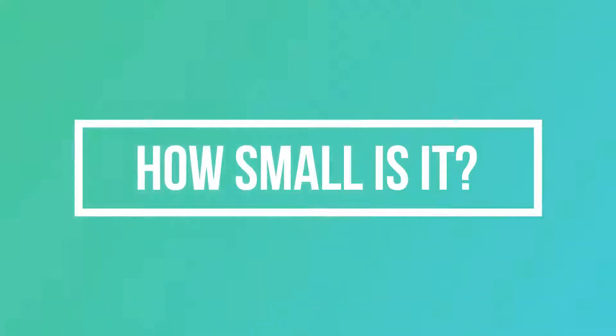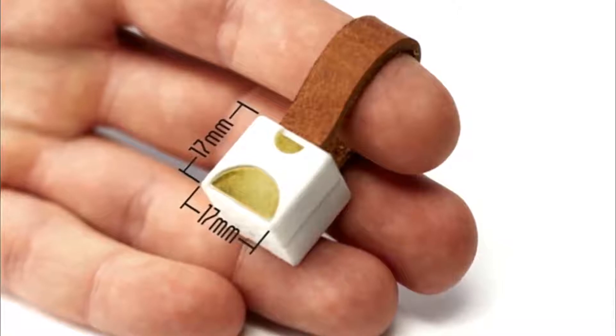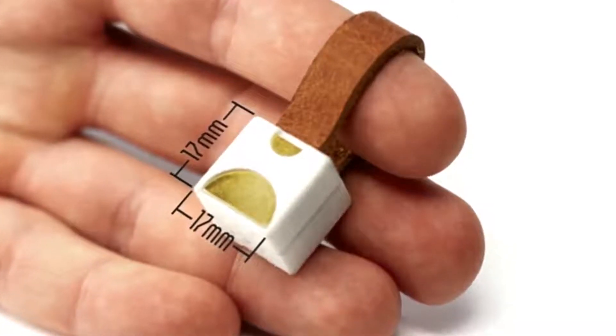How small is it? The Nipper is a tiny 17mm x 17mm x 17mm cube and it weighs just 10 grams.